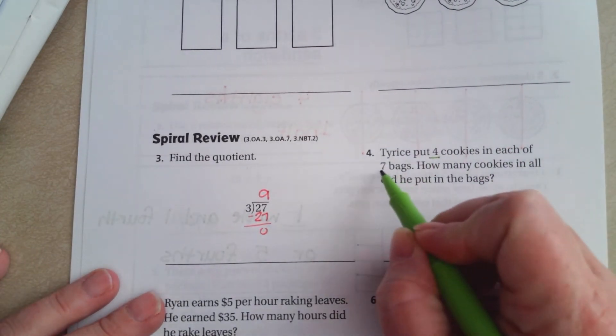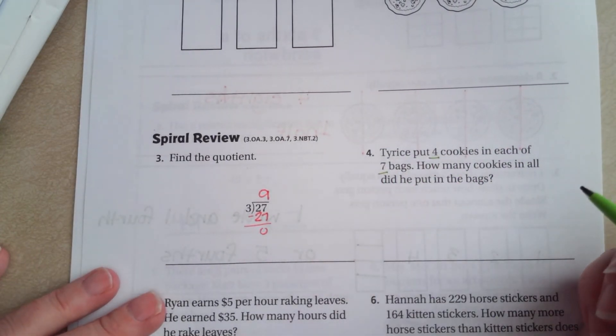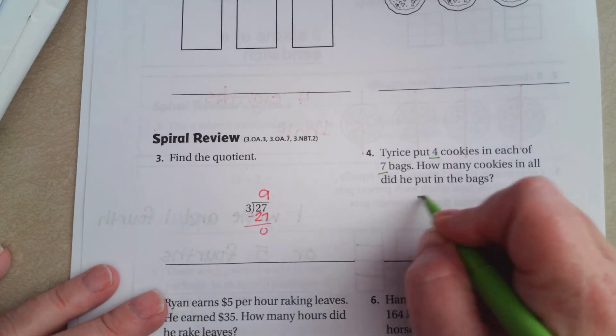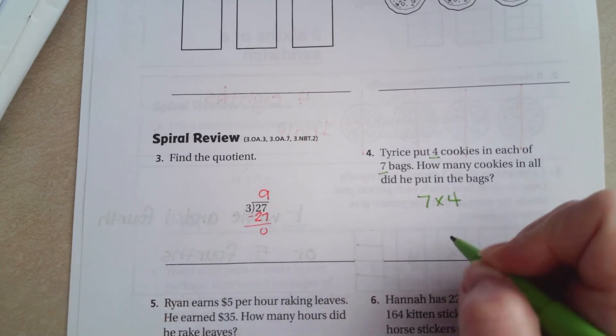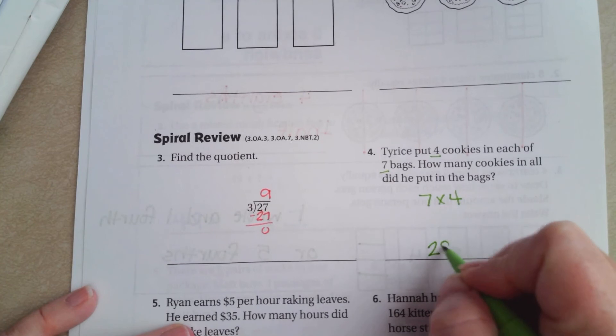Tyrese put 4 cookies in each of 7 bags. How many cookies in all did he put into bags? Well, 7 times 4, that's 28 cookies.